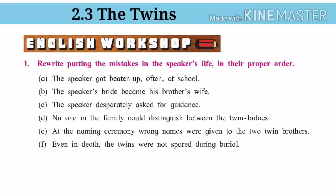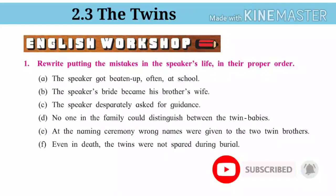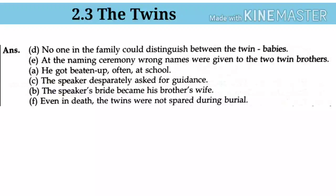Question: Rewind — putting the mistakes in the speaker's life in their proper order. Answer: First, no one in the family could distinguish between the twin babies. Second, at the naming ceremony, wrong names were given to the two twin brothers. Third, he got beaten often at school. Fourth, the speaker desperately asked for guidance. Fifth, the speaker's bride became his brother's wife. And even in death, the twins were not spared during burial.